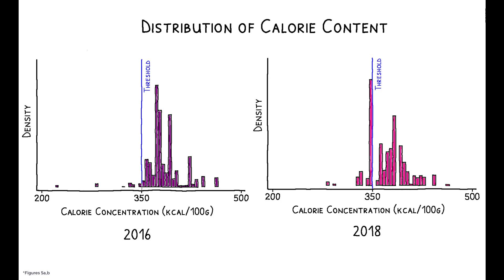This figure compares the distribution of calorie concentration for breakfast cereals pre- and post-Food Act. Sugar and calorie concentrations declined by 11.5 and 2.8 percent on average, and many firms modified their nutritional content just enough to squeeze below the regulatory threshold.